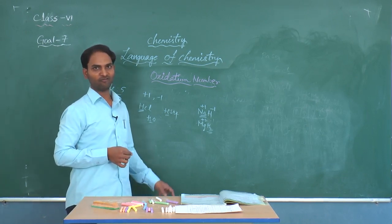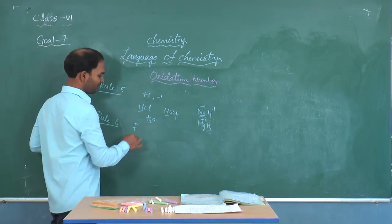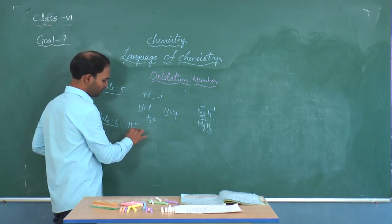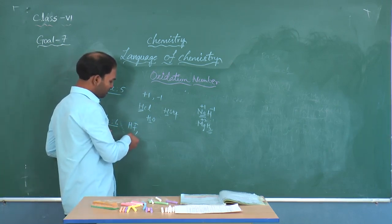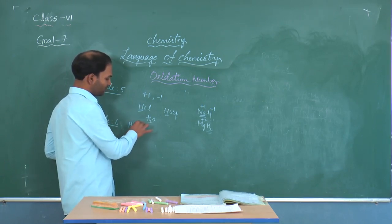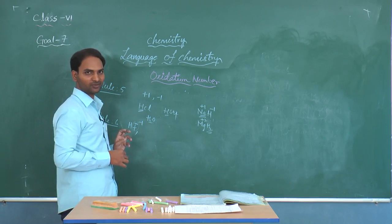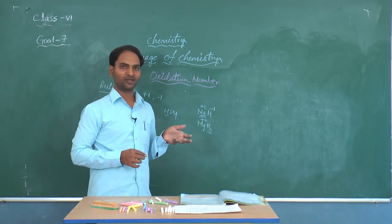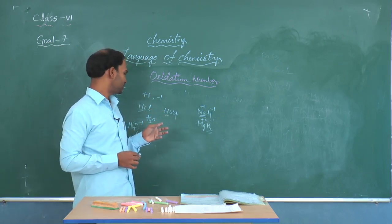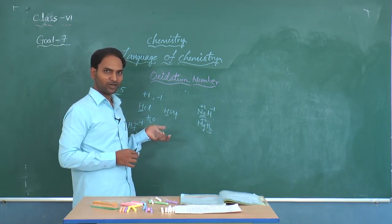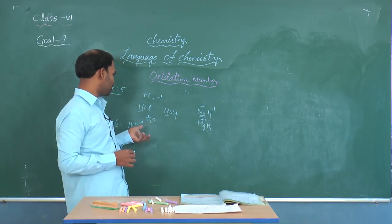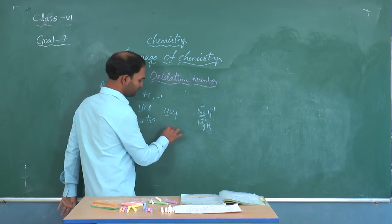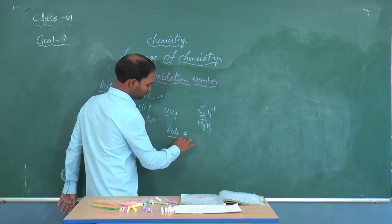Rule 6 talks about the oxidation states of fluorine. In fluoride compounds — if you take HF — fluorine exhibits a negative oxidation state of -1. Not only in HF, but in all compounds of fluorides it exhibits -1. This is because fluorine is a highly electronegative element, so it always exhibits -1 oxidation state.